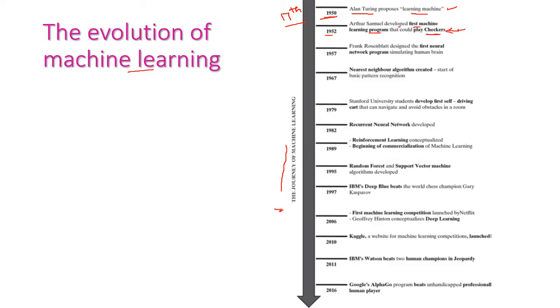In the year 1957, Frank Rosenblatt designed the first neural network program simulating human brain. The neural network program was designed in the year 1957 itself. In 1967, the nearest neighbor algorithm was created, which is the start of pattern recognition. By using this we can solve many of the problems, that is the nearest neighbor algorithm.